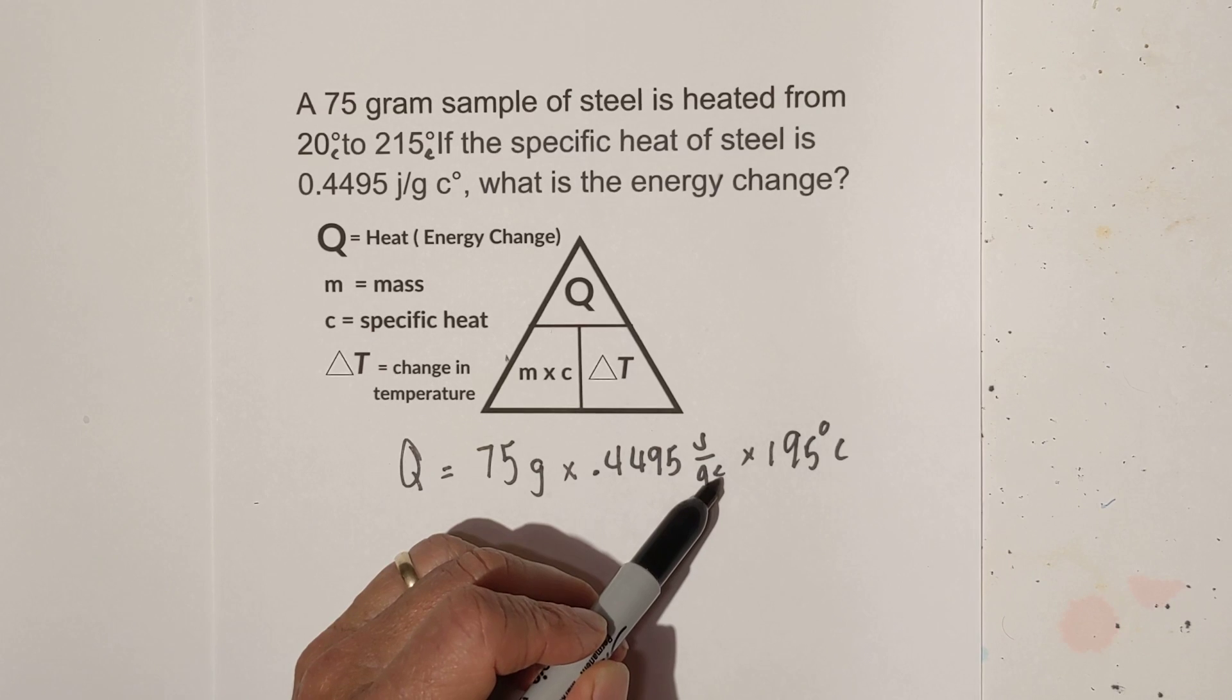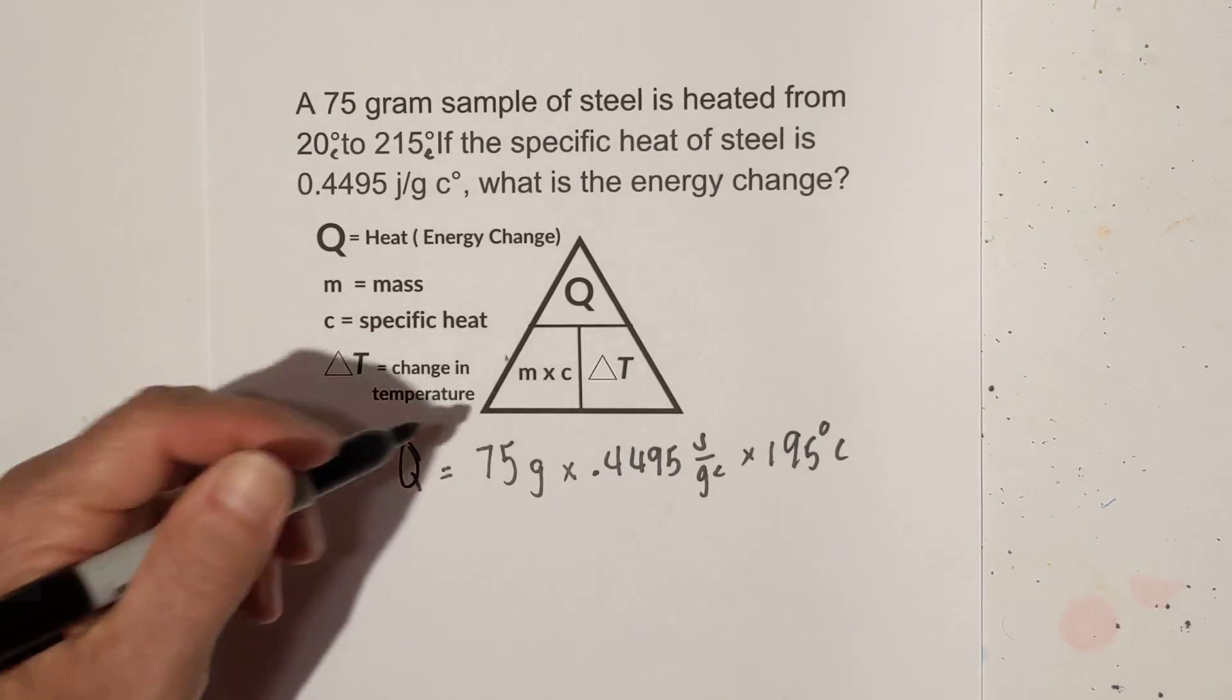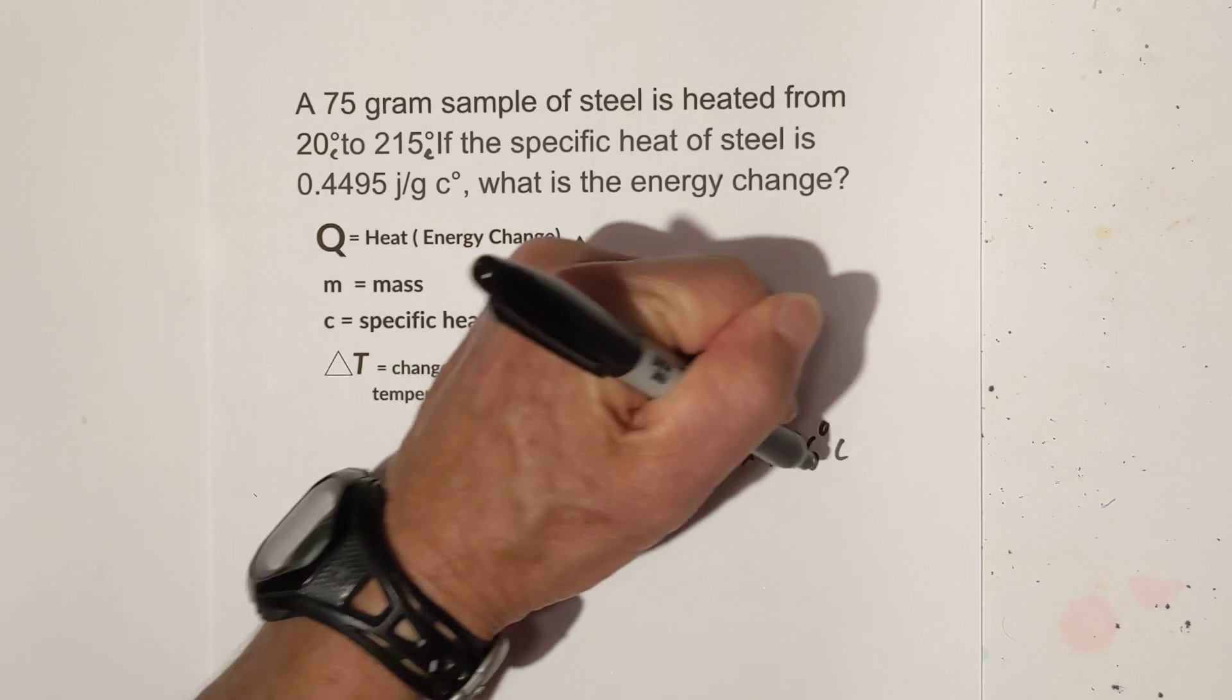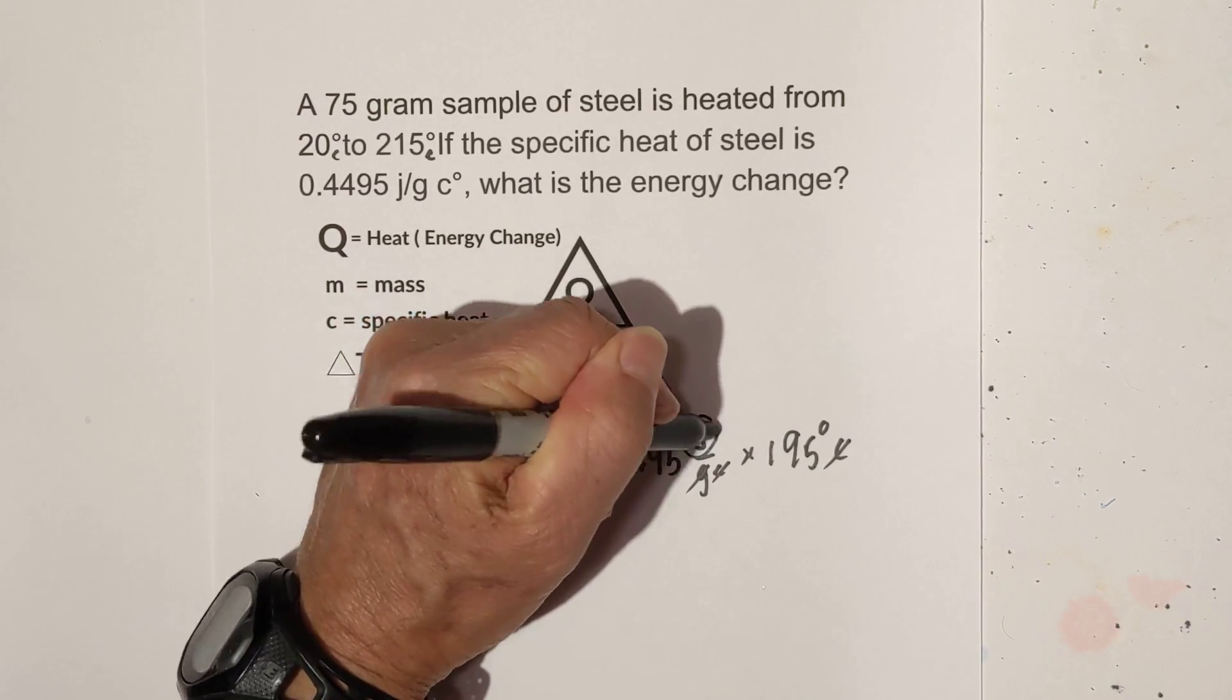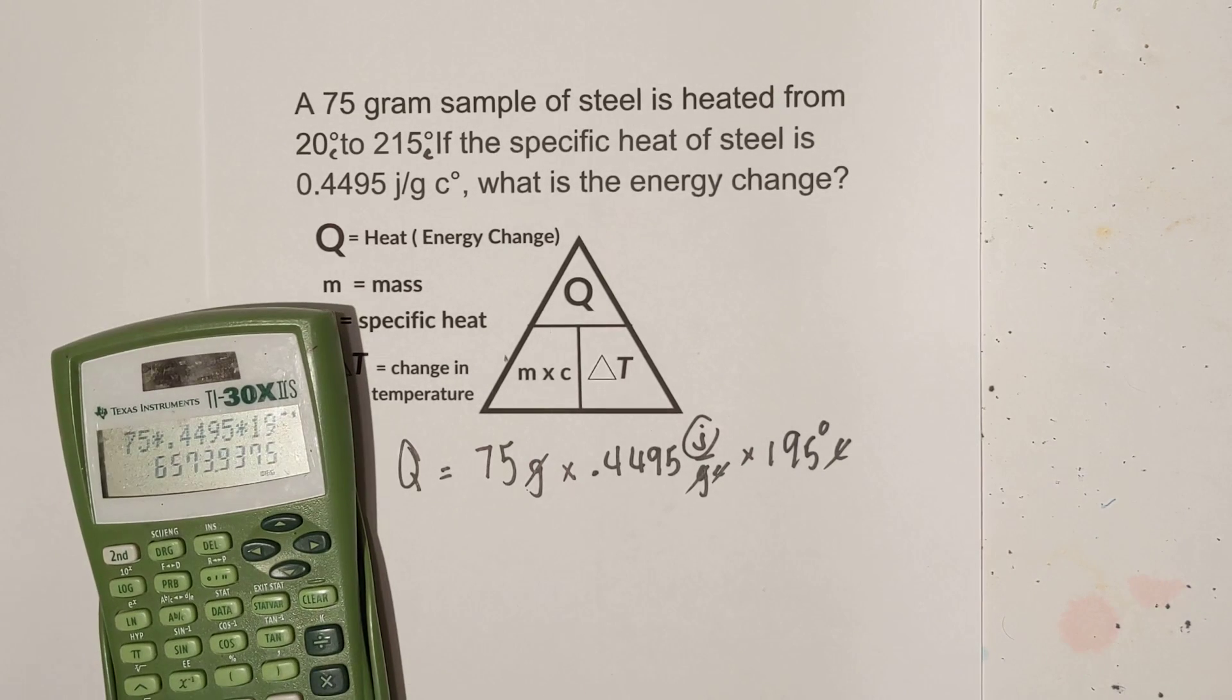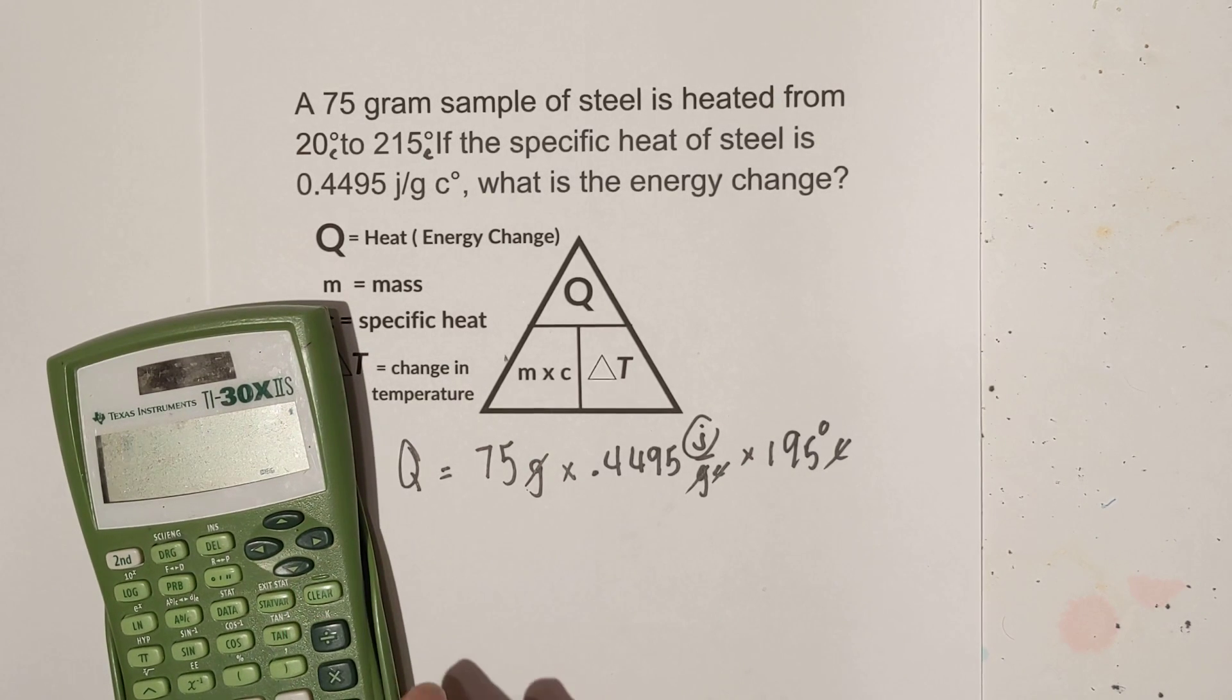Here grams and Celsius is on the bottom. So these grams are going to cancel, the C's will cancel and we're left with joules.